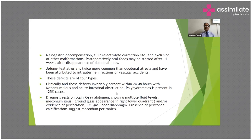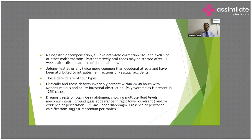Jejunoileal atresia is twice more common than duodenal atresia and has been attributed to intrauterine infection or vascular accident. These defects are of four types and invariably present within 24 to 48 hours with meconium ileus and acute intestinal obstruction. Polyhydramnios is present in 25% of cases. Diagnosis rests on plain X-ray abdomen showing multiple fluid levels, meconium ileus with ground-glass appearance in the right lower quadrant, and evidence of perforation with gas under the diaphragm.